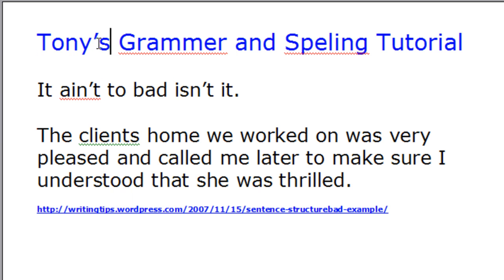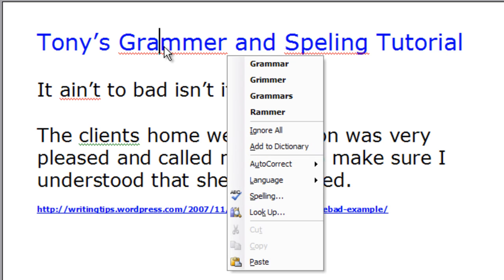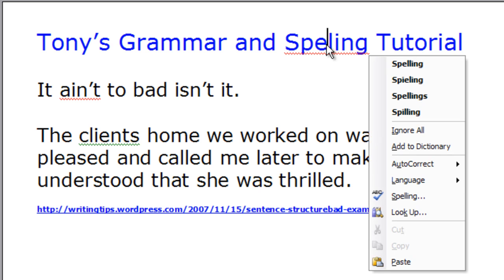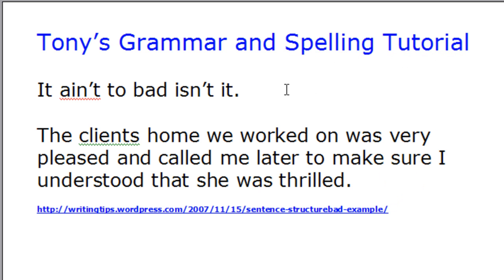So I right-clicked, and now I'll come down to 'grammar,' which I've misspelled. I'm going to right-click on that — it makes some suggestions on what I might want to spell. I'm going to click on 'grammar' and correct that. 'Spelling' — I misspelled that too. I'm going to click on 'spelling.' So I right-click on items to change them.